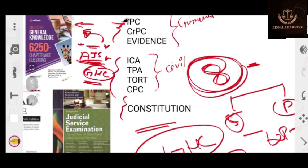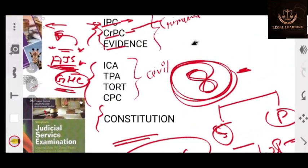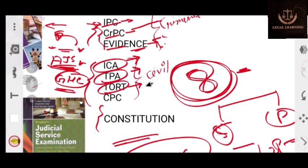Now here you can see the syllabus: IPC, CrPC, and Evidence. These are criminal law. IPC is substantive criminal law. CrPC completes the IPC, and also the Evidence Act. Evidence law is applicable to both civil and criminal proceedings. Then ICA is Indian Contract Act, TPA is Transfer of Property Act, tort.